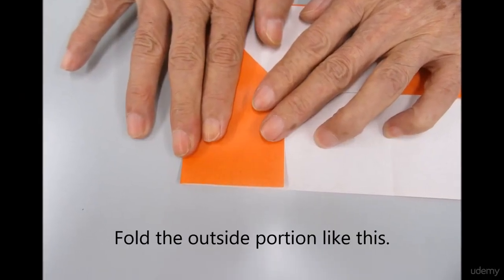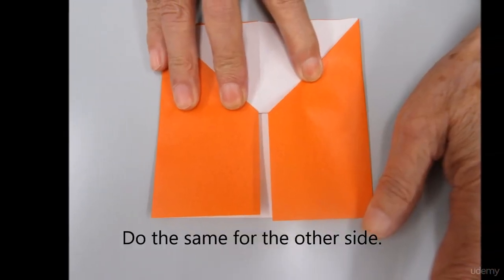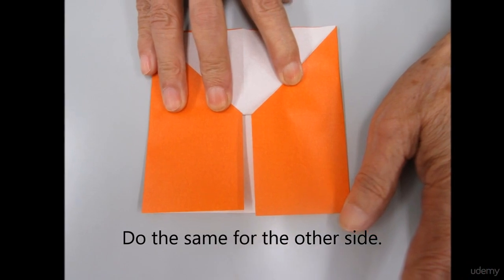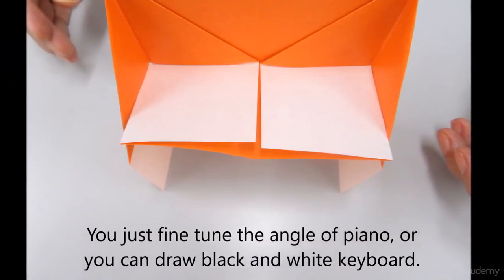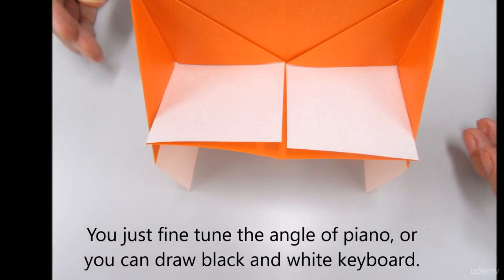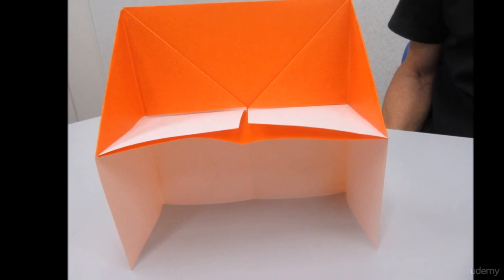Fold the outside portion back to the rectangles. Then you can fine-tune the angle of the piano, or you can draw a black and white keyboard. The piano is done.